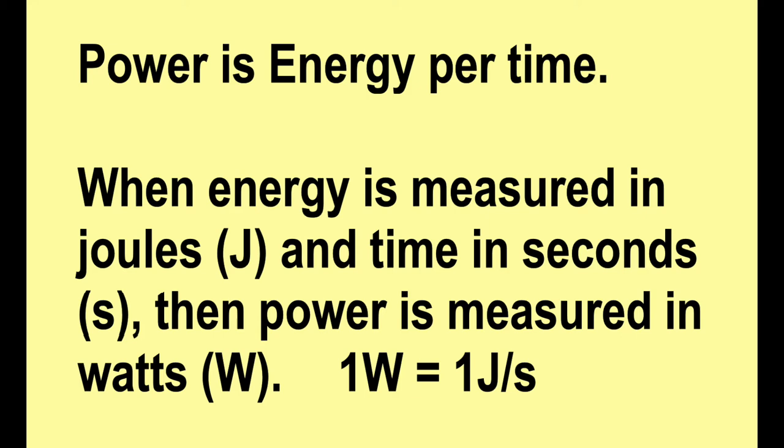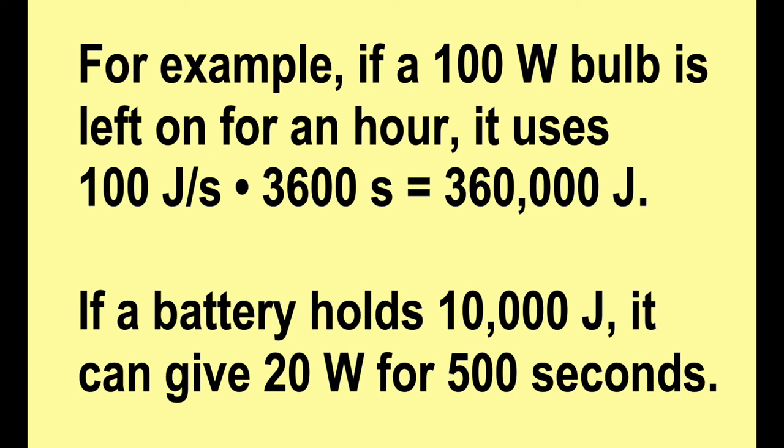For example, if a 100-watt bulb is left on for an hour, it uses 100 watts times 3,600 seconds, which is 360,000 joules.